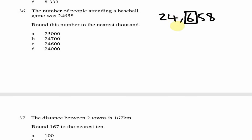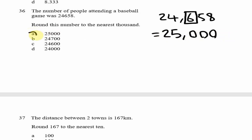The hundreds digit here is 6, which is 5 or greater, so we round the thousands digit — the 4 — up by one, making it 5. Every digit after that is replaced with zero. Therefore our answer is 25,000, which is option E.